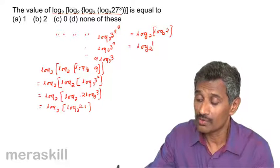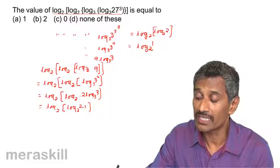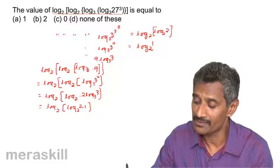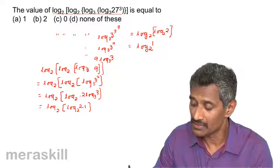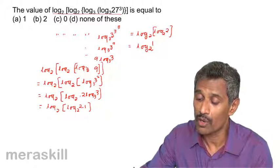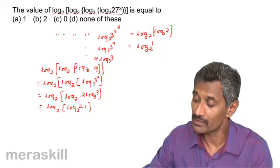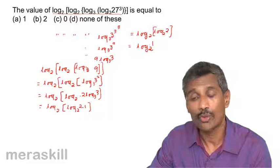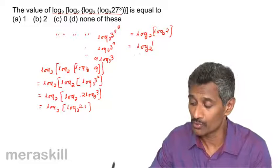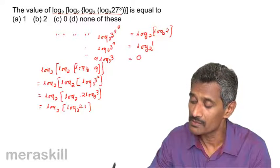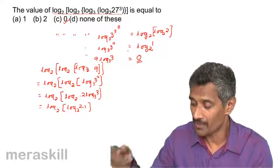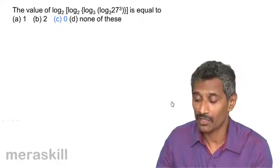So this becomes log of 3 cubed raised to 3, that is 3 raised to 9, which gives 9 log 3 to the base 3, which is 9. Hence at the next stage we have log 9 to the base 3, written as 2 log 3 to the base 3, giving log of log 2 to the base 2, which is log 1 to the base 2. Now log 1 to any base is 0 — remember that rule. So the value of this expression is 0. The answer is option C.